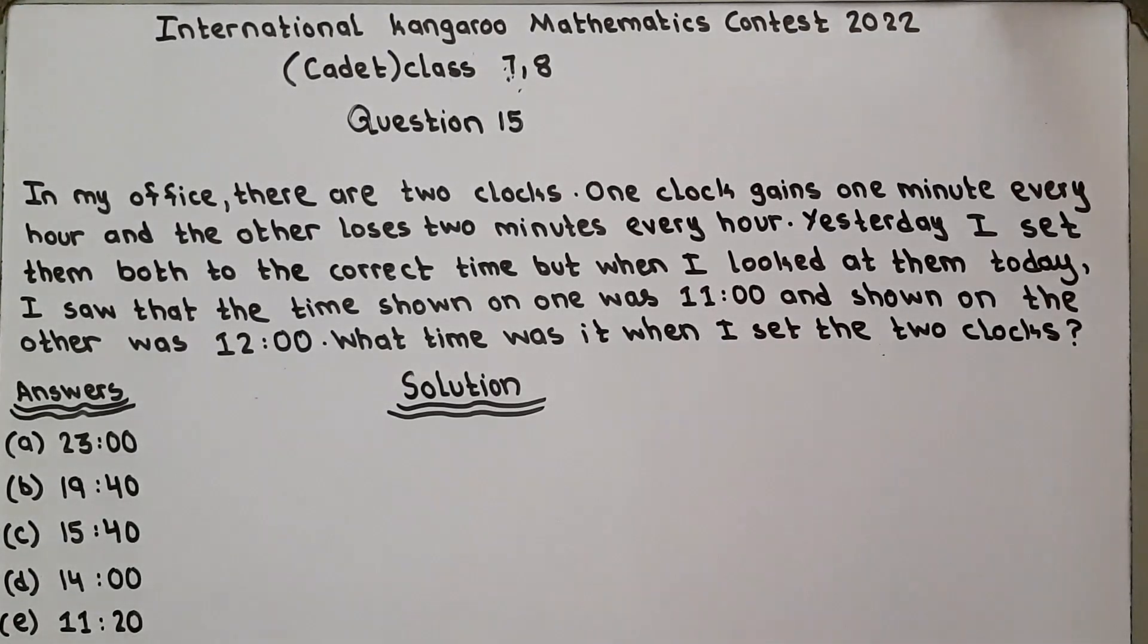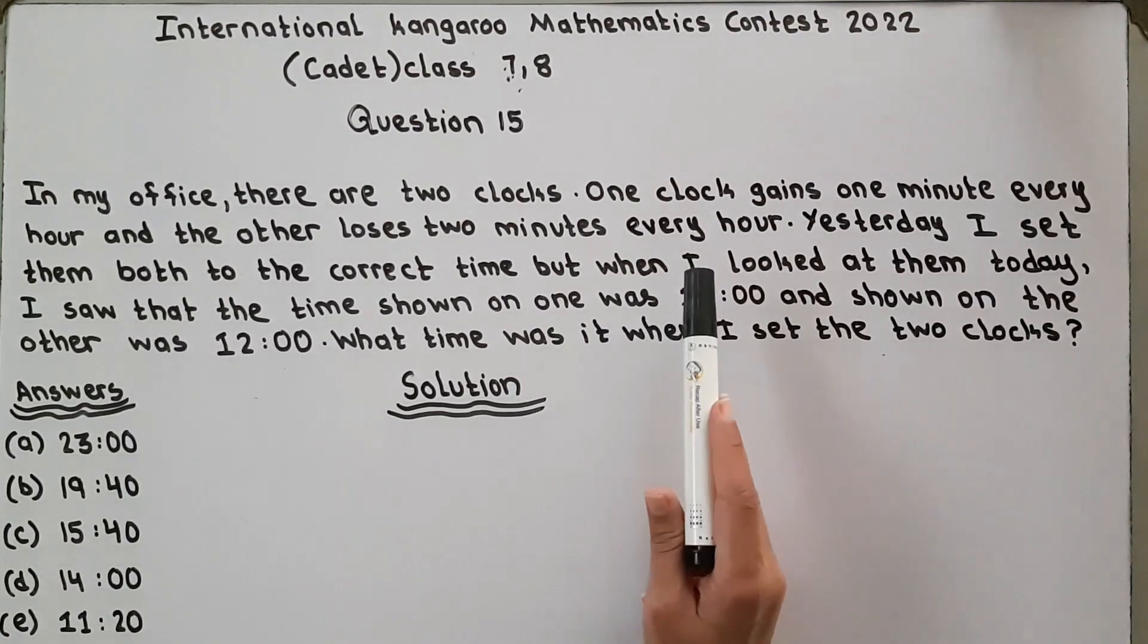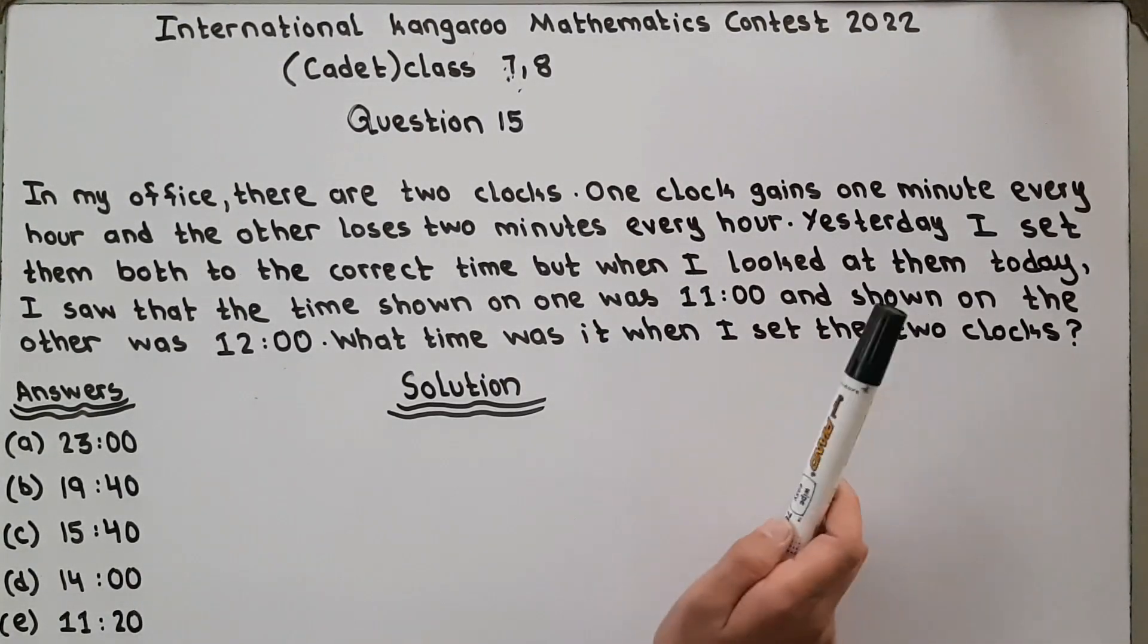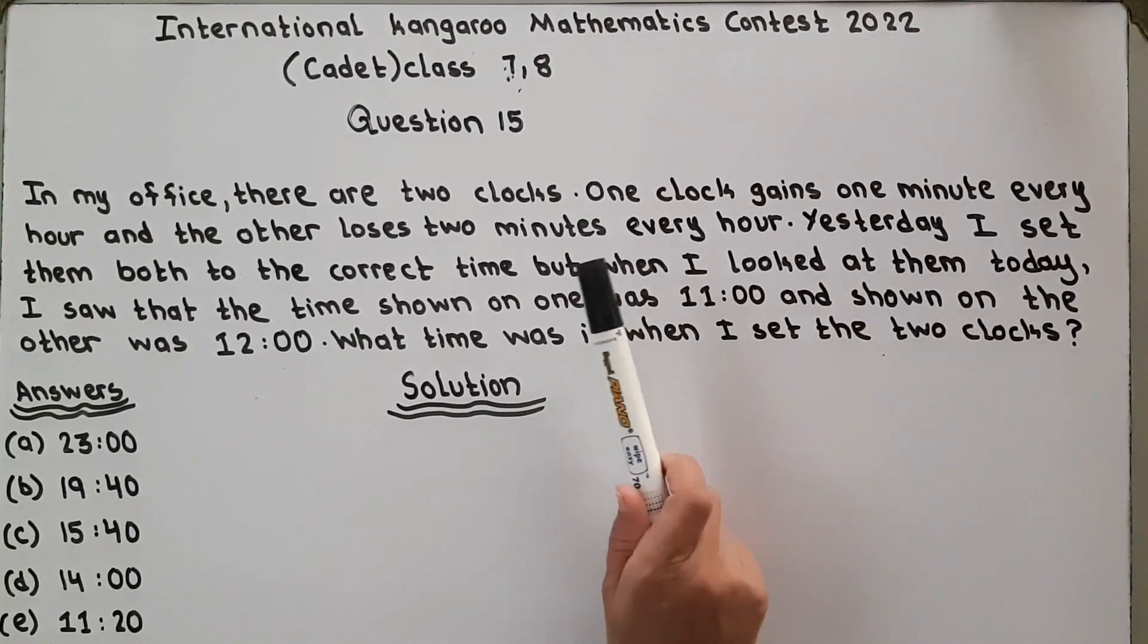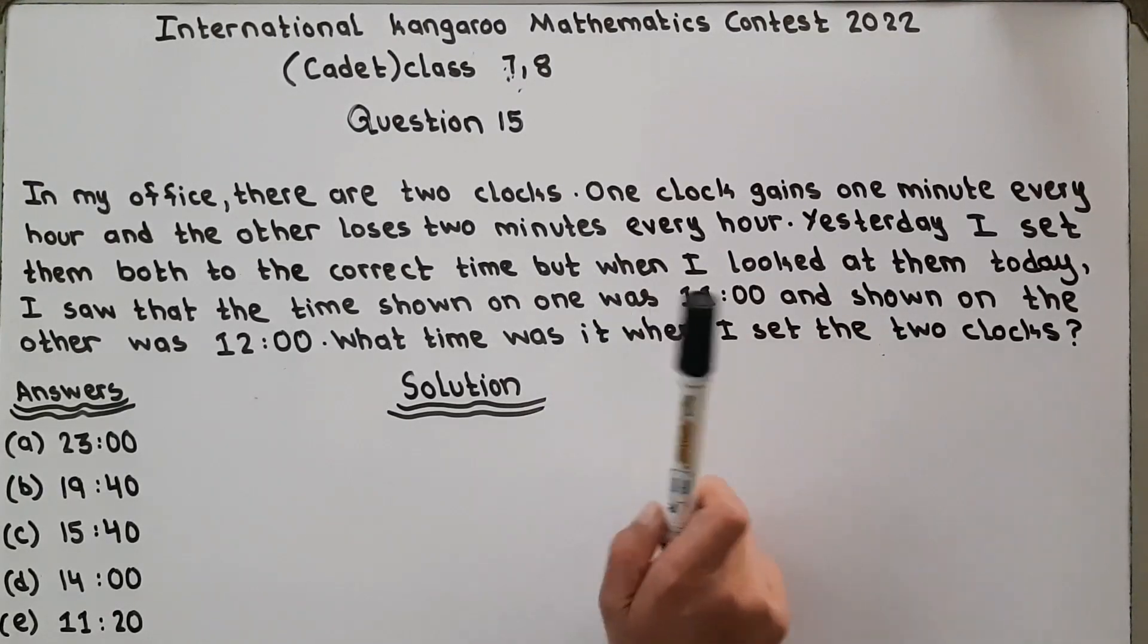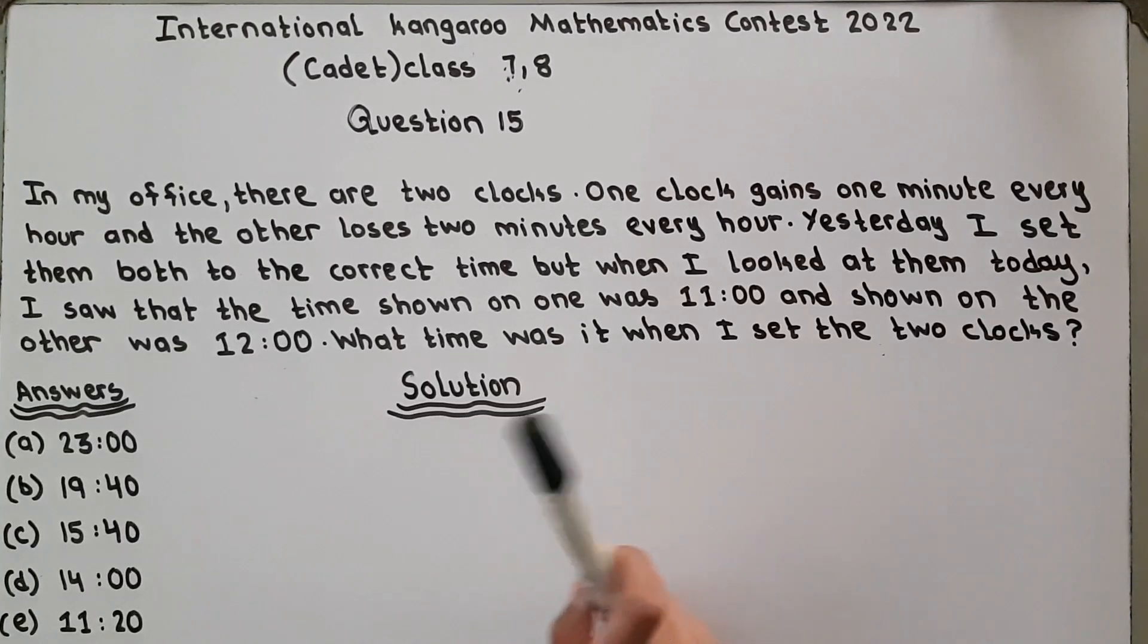The other loses two minutes every hour. Yesterday I set them both to the correct time, but when I looked at them today, one was showing 11:00 and the other was showing 12:00.